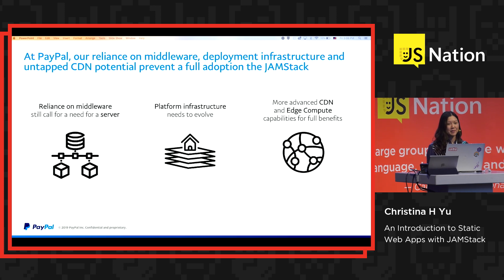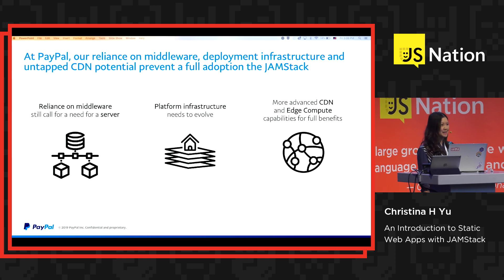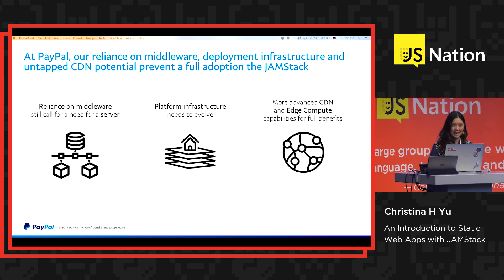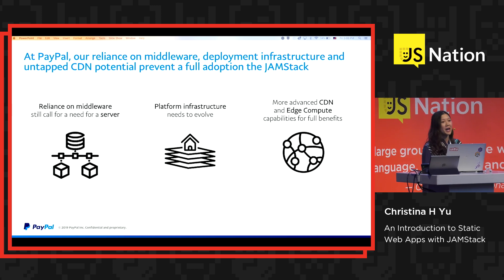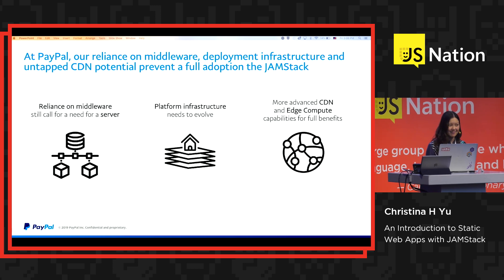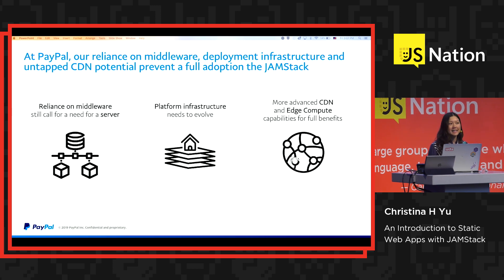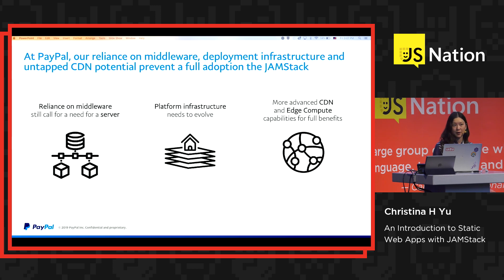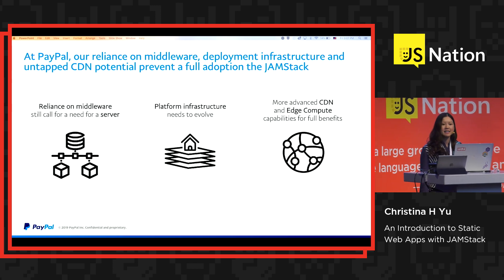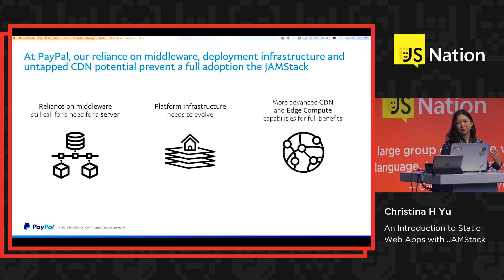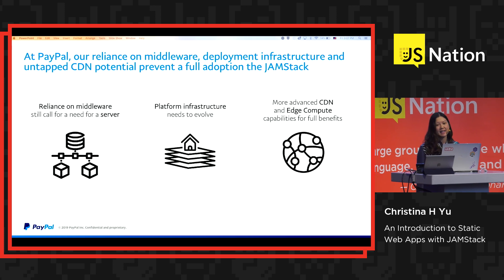However, at PayPal, our reliance on middleware, present deployment infrastructure, and untapped CDN potential prevent a full adoption of the JAMstack at the moment. We rely on middleware to do functions like authentication, so in the two apps I demonstrated, we still need a lightweight server. We will have to evolve our platform infrastructure and deployment processes to accommodate. We will also need more advanced CDN and edge compute capabilities. Gatsby may generate hundreds of static files we can load onto our CDN, but without the full ability to run JavaScript on the edge, it's difficult to determine which files to serve to which users. With enhanced edge capabilities, we will be able to add routing logic for faster redirects, improve performance, and further decouple from our servers.